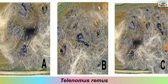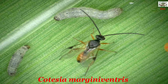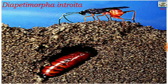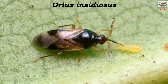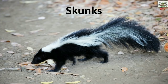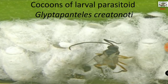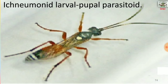Specific biocontrol agents shown include the egg parasitoid Telenomus remus, from whose egg mass emergence can be seen; Trichogramma species shown with yellowish and reddish spots on the egg mass; the larval-pupal parasitoid Cotesia marginiventris; the pupal parasitoid Archytas marmoratus; Dioptromorpha introita; the striped earwig Labidura riparia; the spined soldier bug Perillus maculiventris; Orius insidiosus; the fungal pathogens Entomophaga aulicae and Nomuraea rileyi; the larval parasitoid cocoons of Glyptapanteles creatonotii; and the larval parasitoid Campoletis chlorideae, an ichneumonoid larval-pupal parasitoid. These are all hymenopterans.